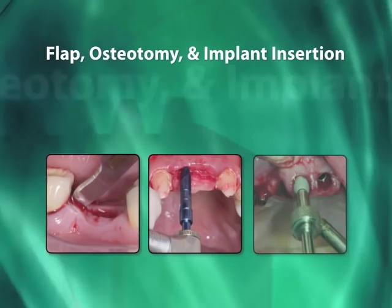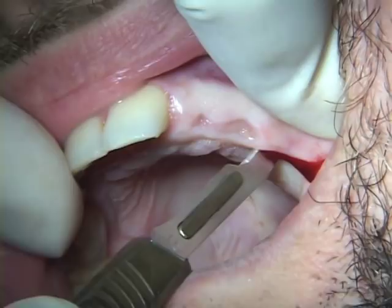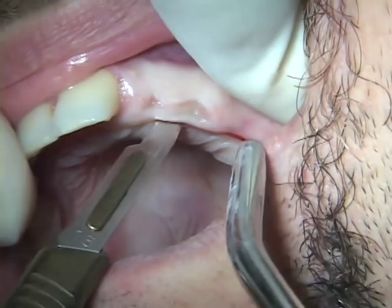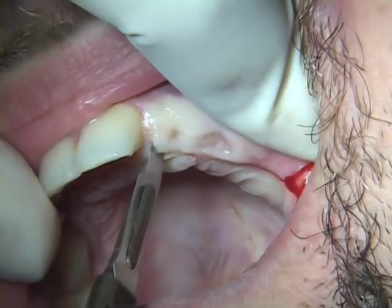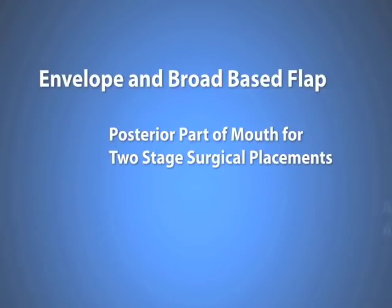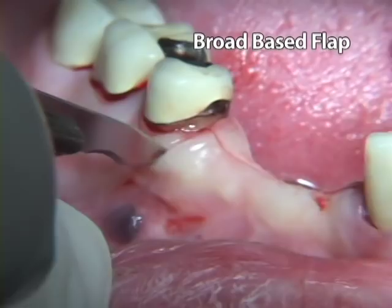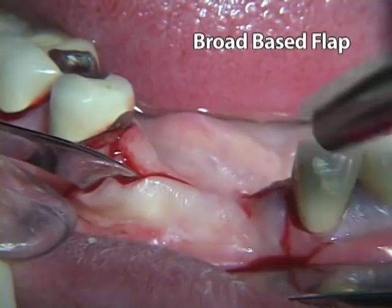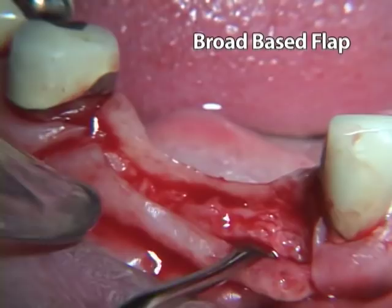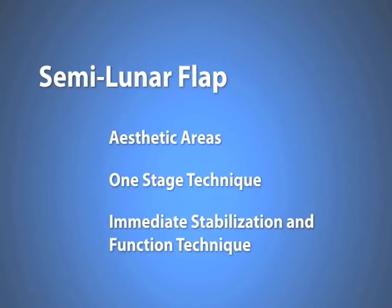After the appropriate local anesthesia, initiate a broad-based pedicle flap with the encrestal incision slightly palatal or lingual to the actual crest. The envelope flap is recommended for use in the posterior part of the mouth for two-stage surgical placements and in areas with a narrow alveolar ridge. The flap consists of two parallel incisions next to the papillae, joined by one transverse incision which is made palatal or lingual to the crest of the ridge. The semi-lunar flap design is recommended for aesthetic areas, as well as for the one-stage technique and for the immediate stabilization and functioning technique. The semi-lunar flap consists of a pedicle flap type incision with its base on the lingual or palatal aspect of the ridge.